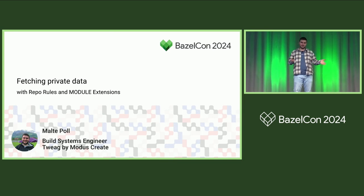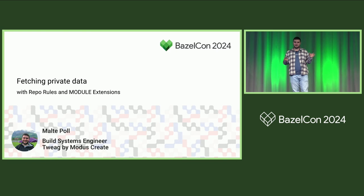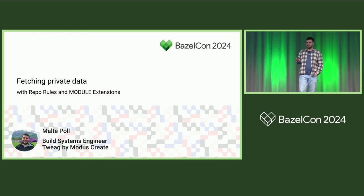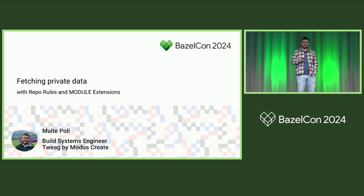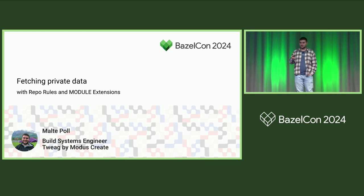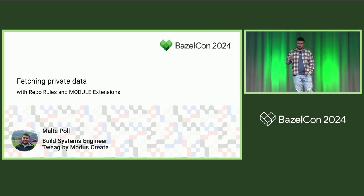But in addition to the actual source code, you also have to depend on a lot of external data that you want to download and make available during your build. This could be machine learning data, or movie data, or whatever else you need for building or for testing. And you want to make this data available, but you also don't know in advance if this data is actually publicly accessible. Maybe you need authentication, and you want to do this right.